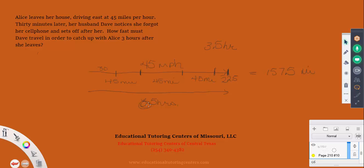Now we need to find how many miles per hour Dave must drive. He has to cover 157.5 miles, and he's on the road for 3 hours. Dividing 157.5 by 3: 3 goes into 15 five times, 3 goes into 7 twice with 1 remainder, then 3 goes into 15 five times again — giving 52.5 miles per hour.